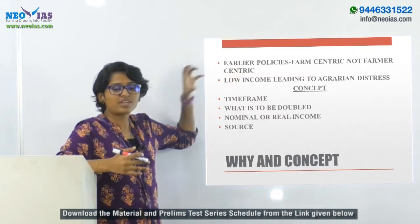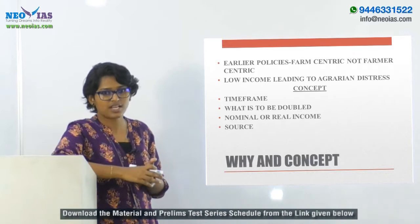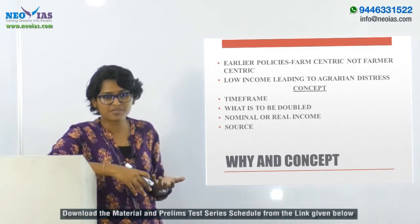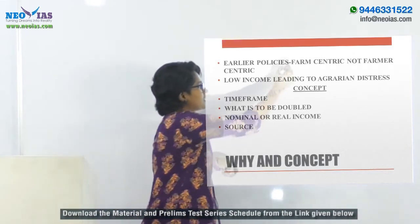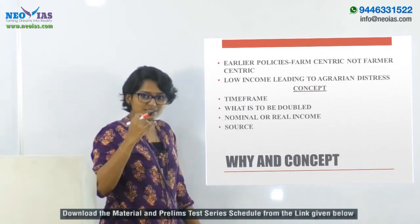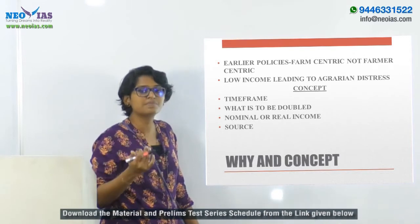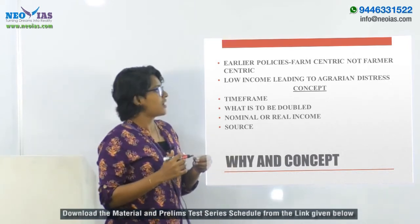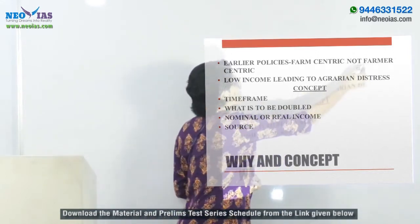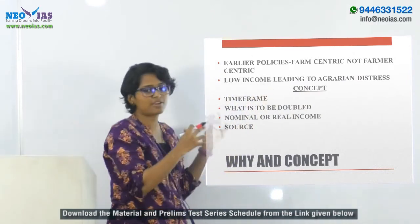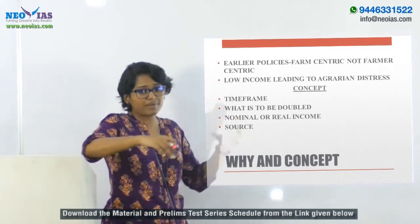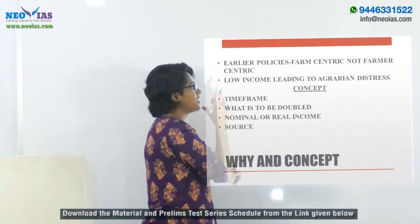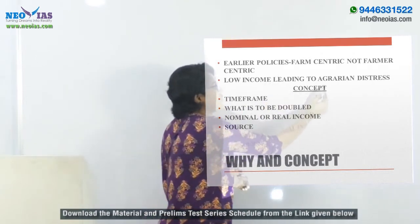First of all, let's understand why there is a need for doubling farmers income. All previous agriculture policies were concentrated on increasing agriculture productivity or meeting food security - that means it was farm-centric, not farmer-centric. There was less recognition for increasing farmers welfare or farmers income. This concentration on increasing agriculture productivity resulted in increasing food production by 45% per person, and the country also became a net exporting agriculture commodity country. But this led to low income earned by farmers in this sector.